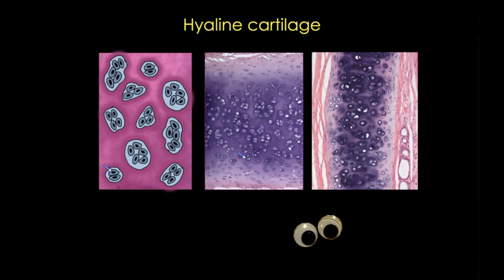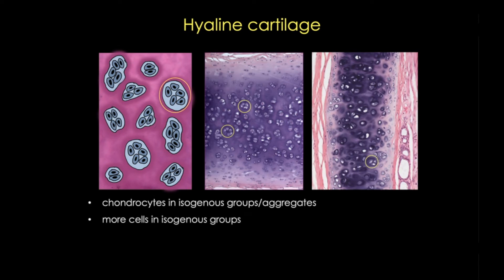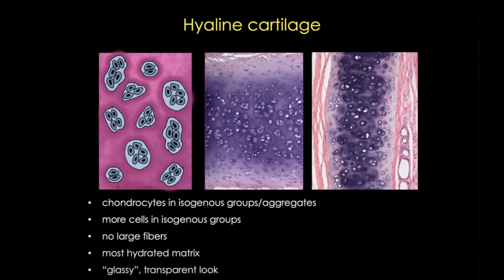In hyaline cartilage, these chondrocytes are found in groups of three to seven cells called isogenous groups or aggregates, and these are relatively spaced out. This cartilage has the highest numbers of cells per group. Overall, hyaline cartilage contains very few fibers and looks pretty homogenous. It has a glassy or glossy, almost transparent appearance due to the large amount of water it contains. Its high amount of matrix makes it very basophilic, such that hyaline cartilage usually has a pale to dark purple color, and that color gets darker towards the center.